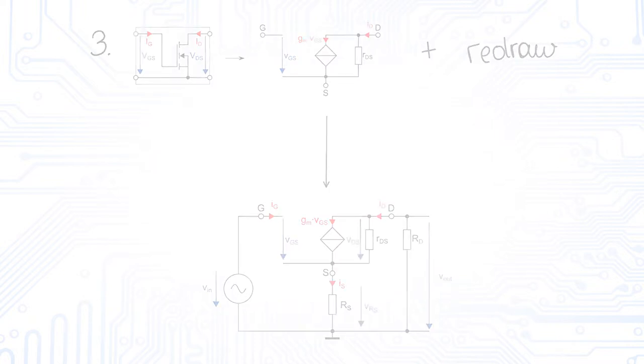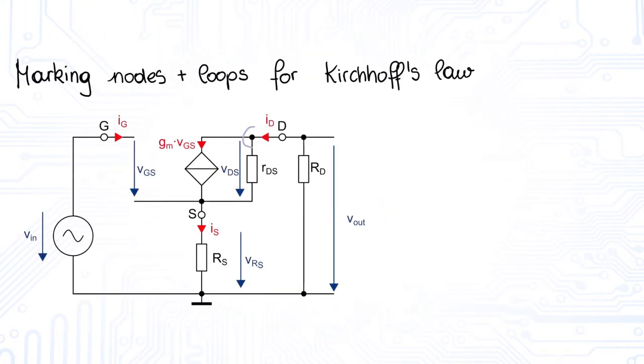Now we want to derive the voltage amplification Vout to Vin. To do so, we mark all relevant nodes and loops in the circuit. From these loops and nodes, we derive the related equations with the help of Kirchhoff's law.